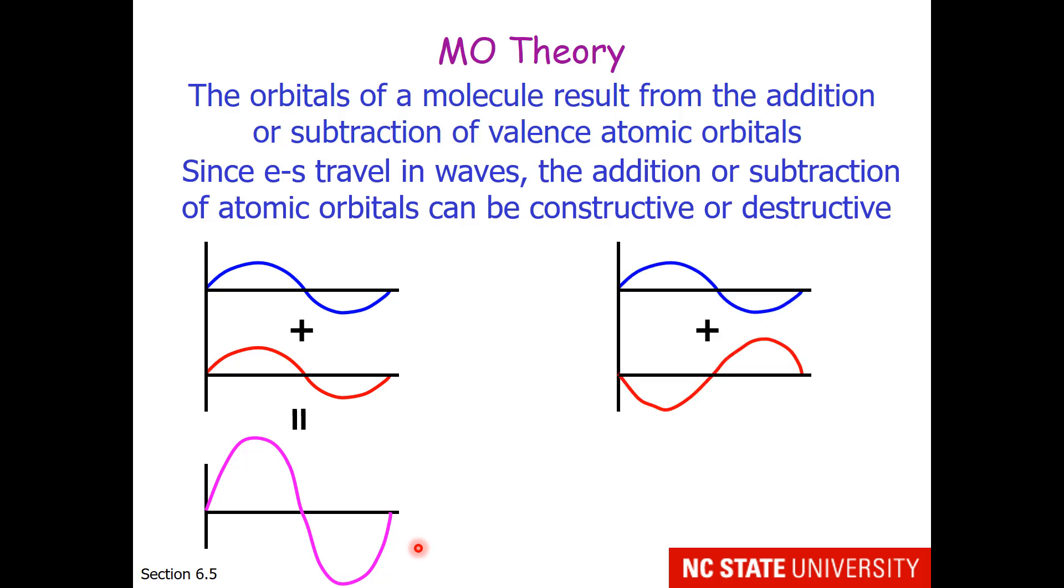But let's say the two waves are 180 degrees out of phase. The peak of one aligns with the valley of another. Well then you get a line. That would be destructive interference.